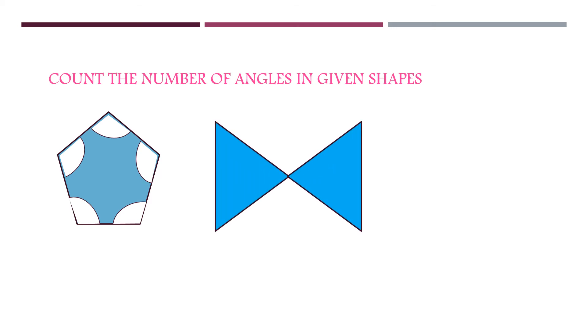Let's see the other picture. Here the angles are marked with these shapes. Count the number of shapes. How many angles are there? There are 6 angles.